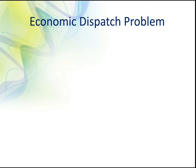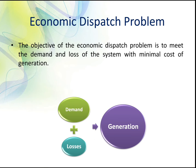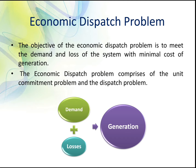Economic dispatch problem. In power systems, the generation is done such that the demand and the loss is met. The objective of the economic dispatch problem is to meet the demand and the loss of the system such that the cost of generation is optimal. The economic dispatch problem comprises of the unit commitment problem and the dispatch problem.